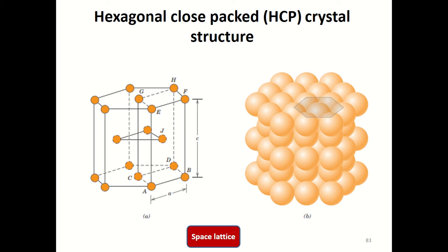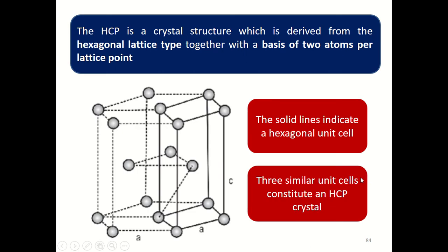What is shown in this image is a hexagonal close-packed crystal structure. This HCP crystal structure is derived from a hexagonal lattice type together with a basis of two atoms per lattice point. That is why the HCP belongs to the category of crystal structures with more than one atom per lattice point. So HCP is a crystal structure derived from the hexagonal lattice type together with a basis of two atoms per lattice point.